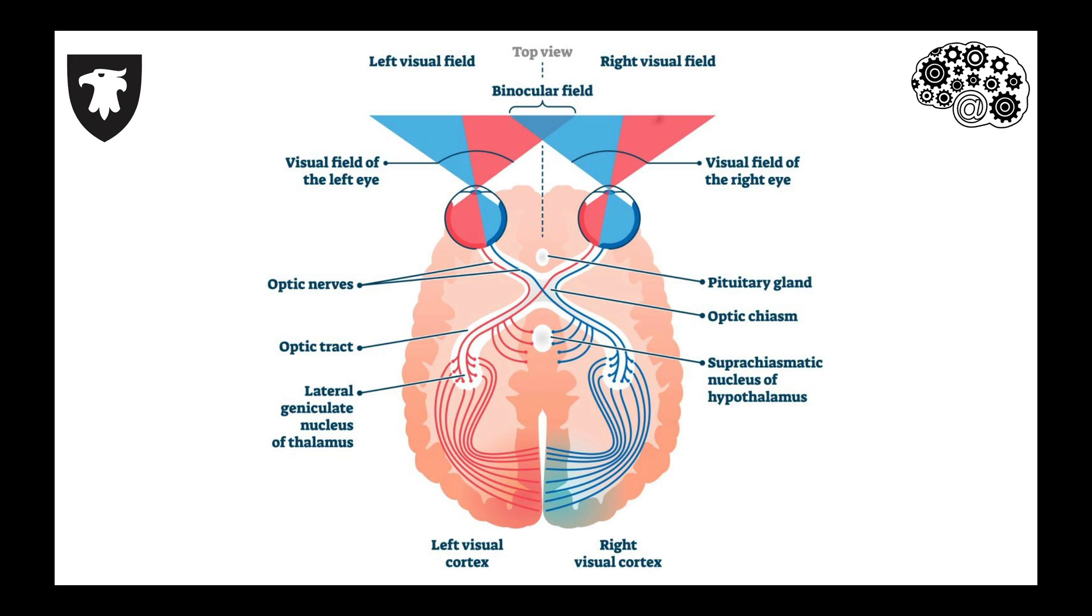For example, the inside part of the right eye and the outside part of the left eye both detect stimuli in the right visual field, shown in red.